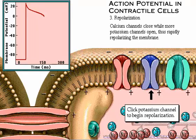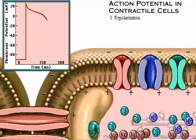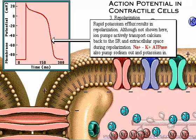The calcium channels close while more potassium channels open, allowing potassium to quickly leave the cell, resulting in repolarization. The rapid potassium efflux results in repolarization, bringing the membrane potential back down to its resting level, with the interior of the plasma membrane more negative than the exterior. Although not shown here, ion pumps actively transport calcium back to the sarcoplasmic reticulum and extracellular space during repolarization, while sodium-potassium ATPases transport sodium out of the cell and bring potassium in, restoring ion concentrations to their resting conditions.